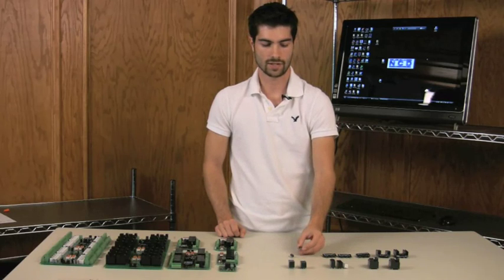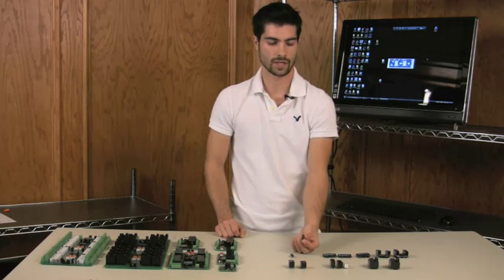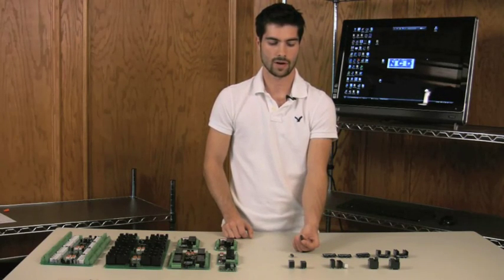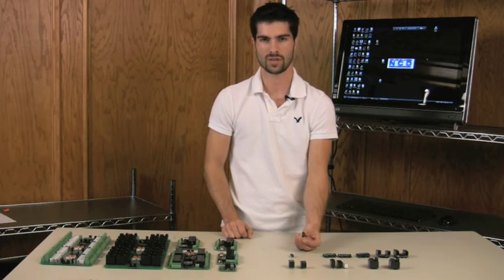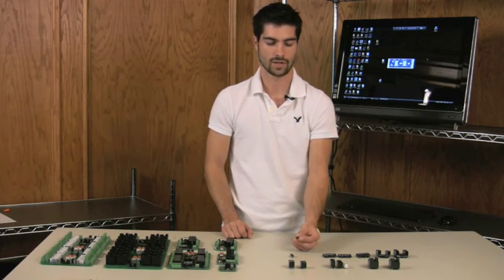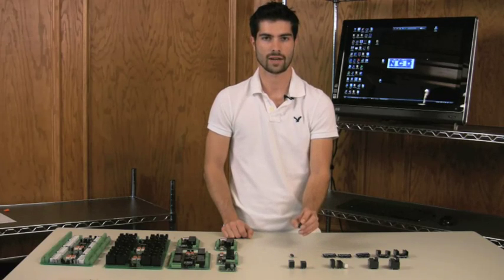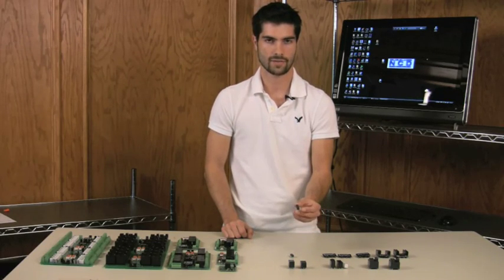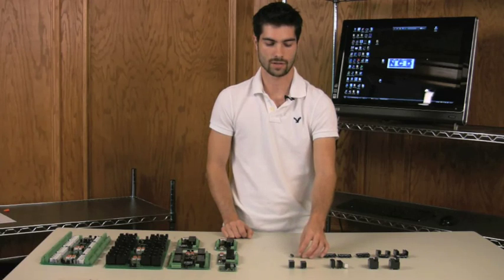We also have these little guys here. These are called reed relays. Now these are real small, and they're good for switching really low current lines, such as communication lines and things of that nature. They're only rated for 0.5 amps, so half an amp at the most is what these little guys are rated for.